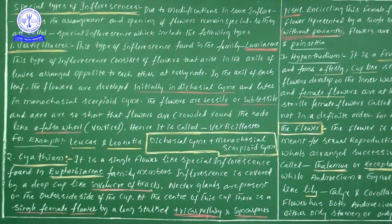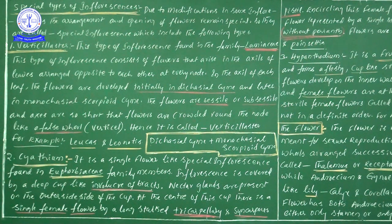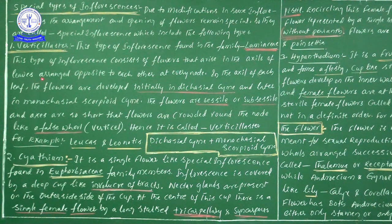To summarize: at every node there is one pair of opposite leaves. At every leaf axillary position, flower formation takes place. So at each node, two opposite leaves are present, and in the axil of each leaf, flowers develop.